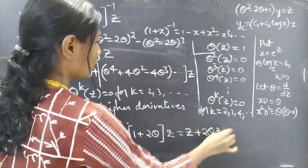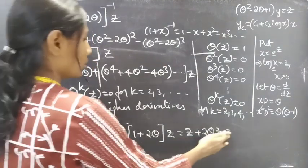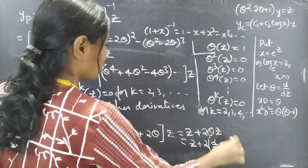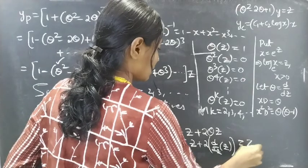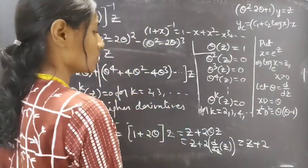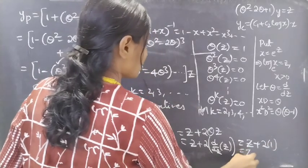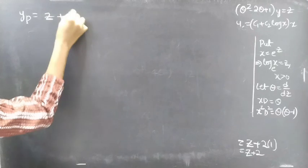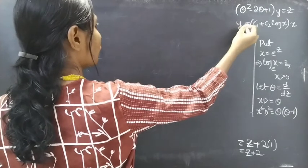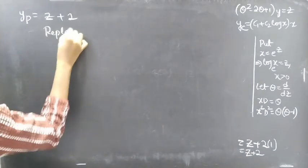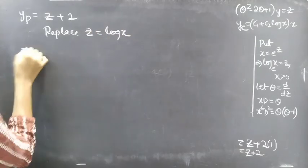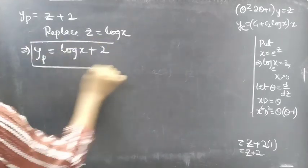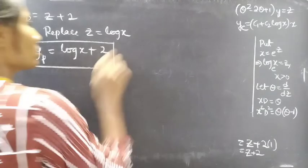We have yp = z + 2. This is in terms of z, so we replace z by log x. Then yp = log x + 2, which is our required particular integral. We now have both yc and yp.